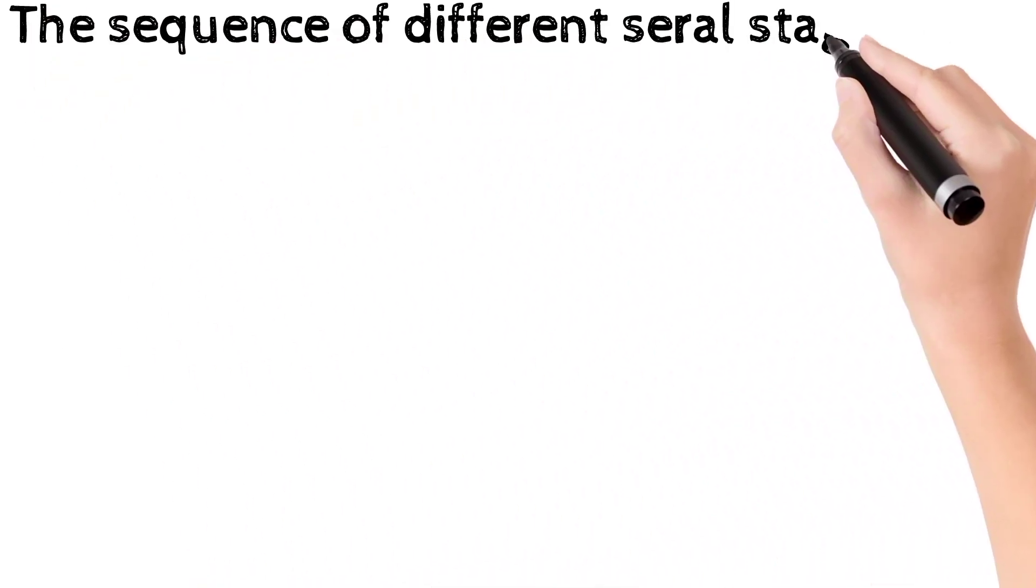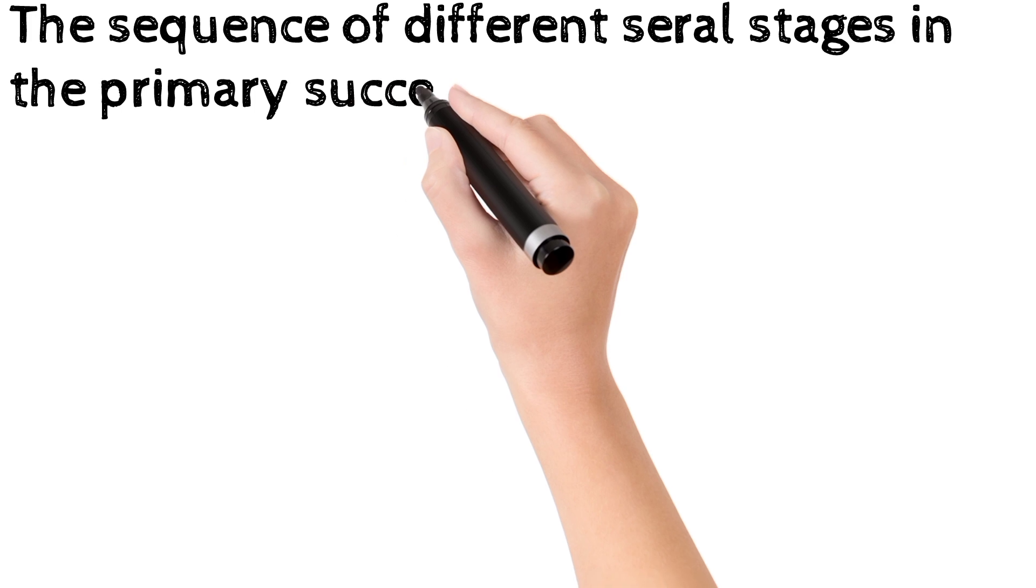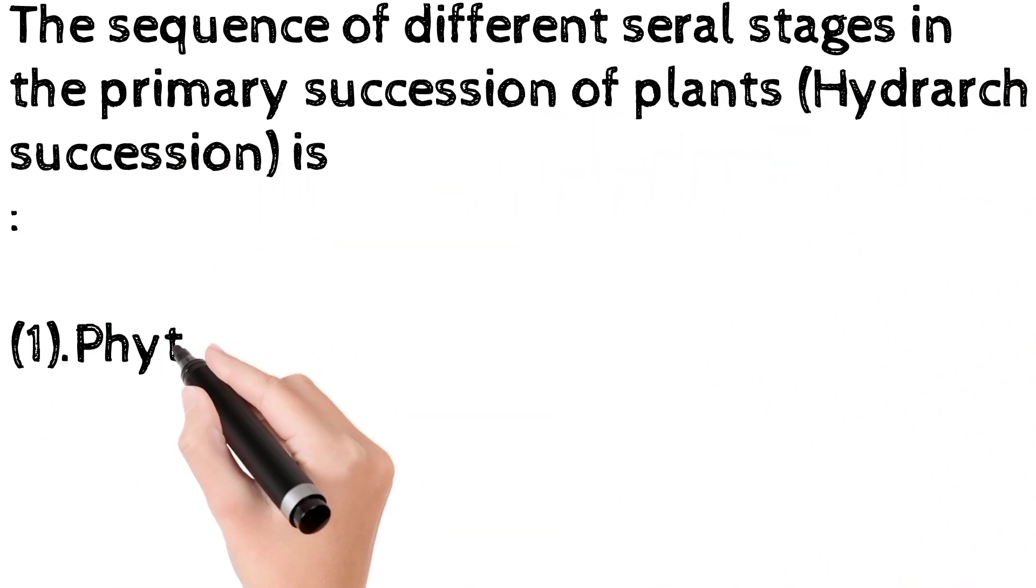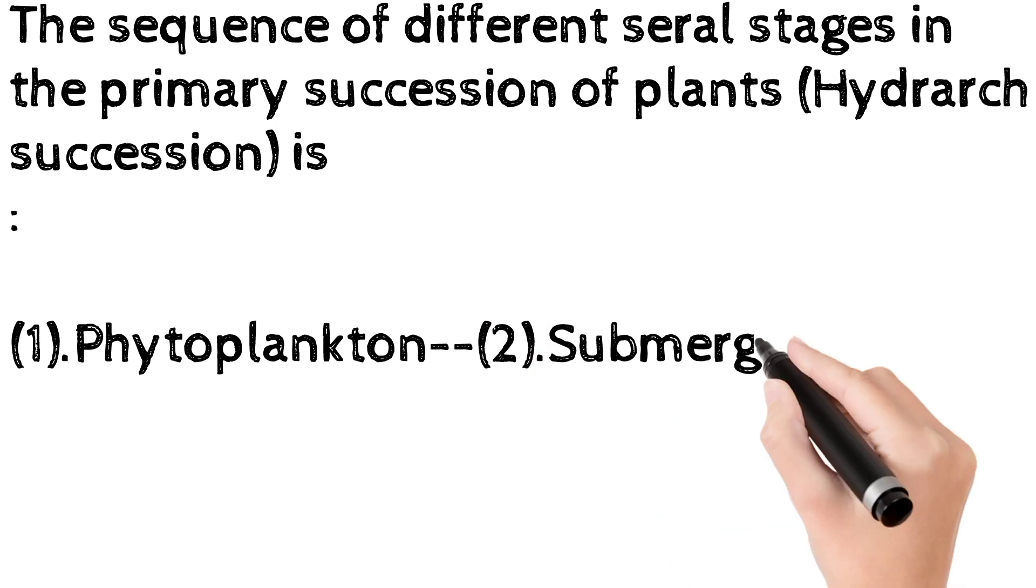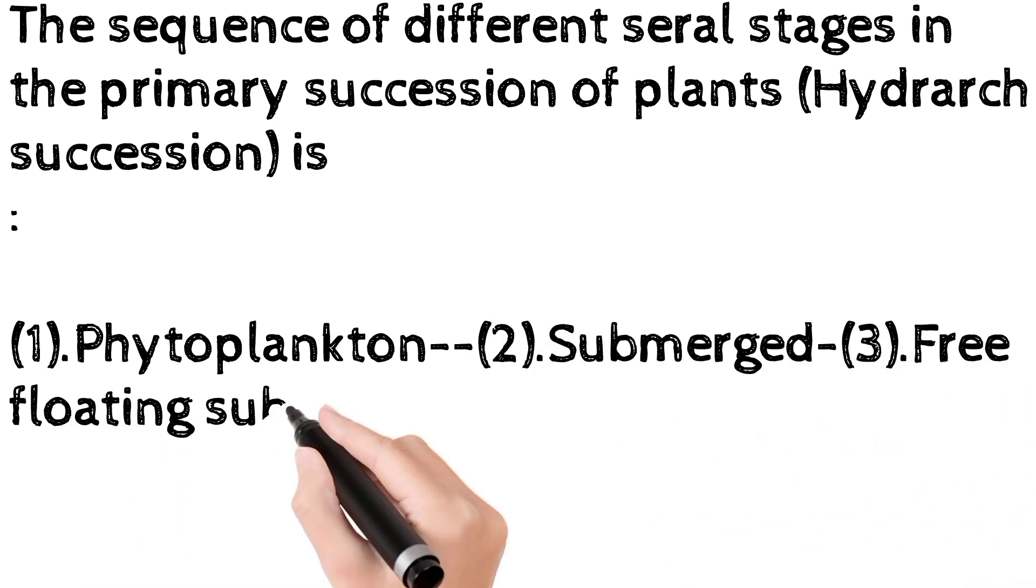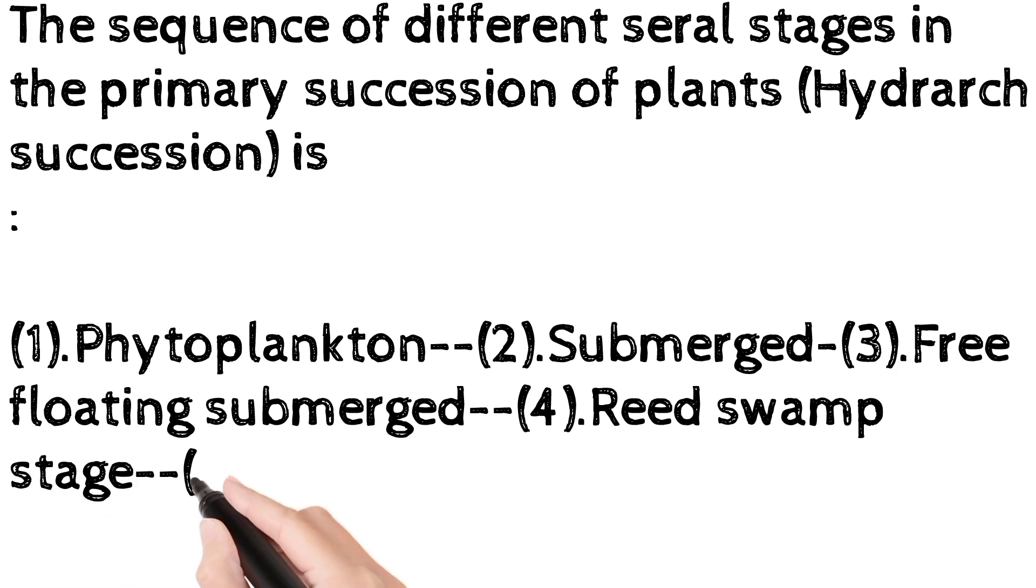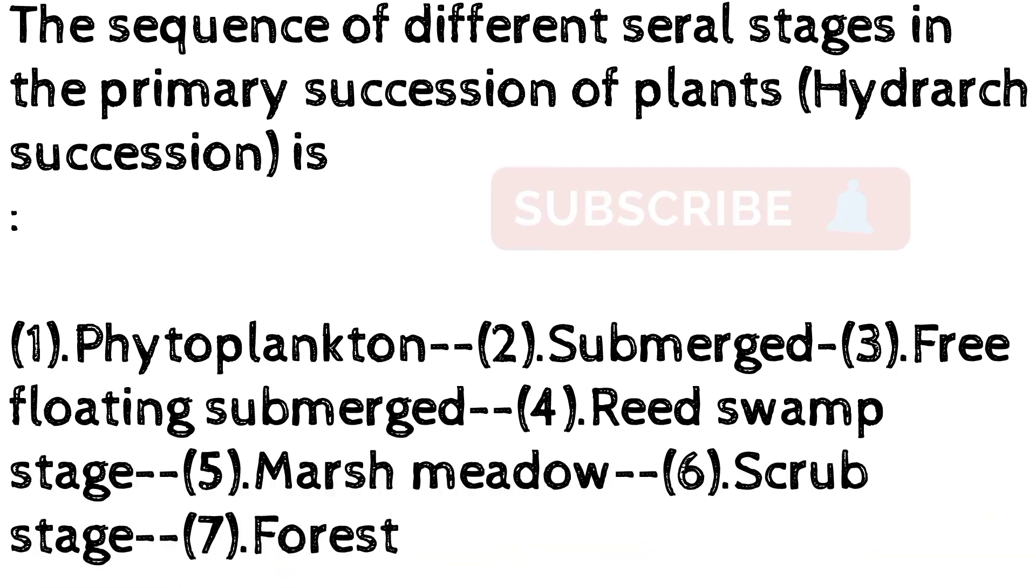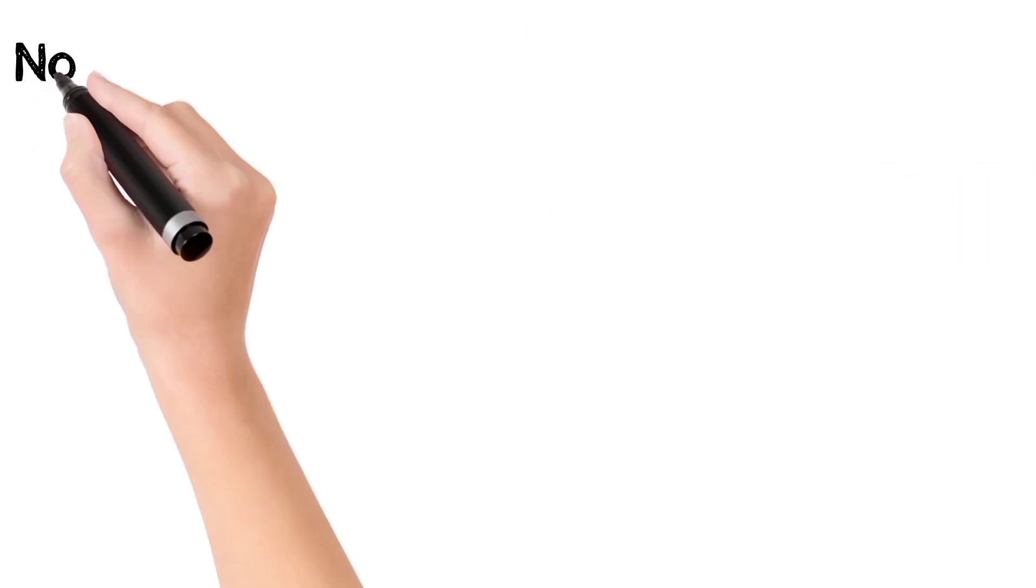We will discuss the primary succession of plants, which is the hydrarch succession. The first is phytoplankton, then submerged, then free floating submerged, then reed swamp stage, then marsh meadow stage, then scrub stage, and then ultimately the climax community is reached, that is the forest.